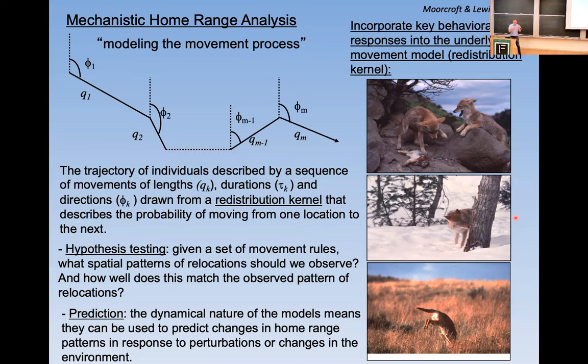And so when things are changing some way, you can make predictions about how patterns should change. In other words, the previous kind of minimum convex polygon methods are really kind of descriptive statistics about a home range. And here, there's this opportunity to do prediction.